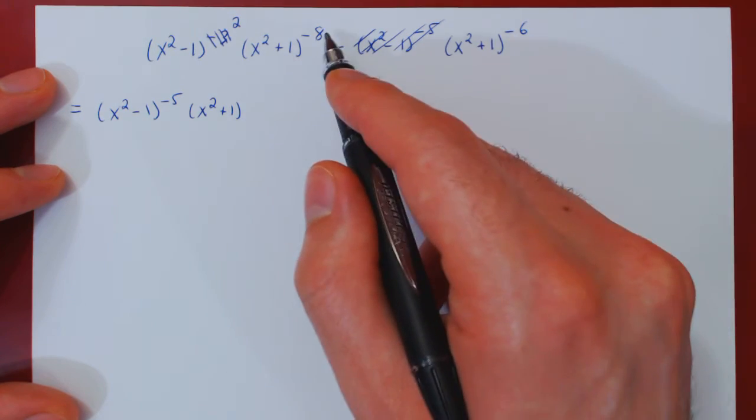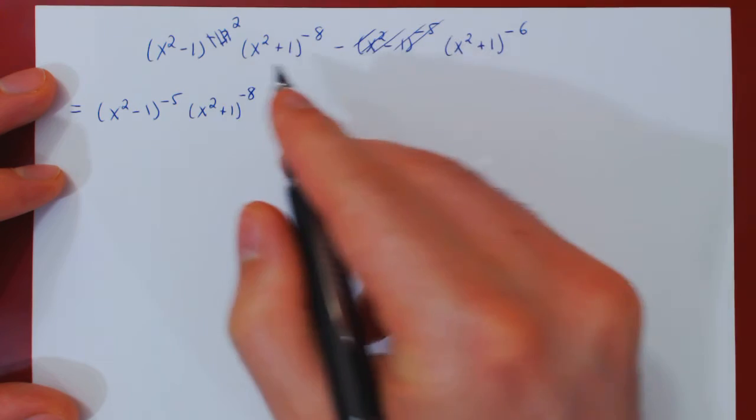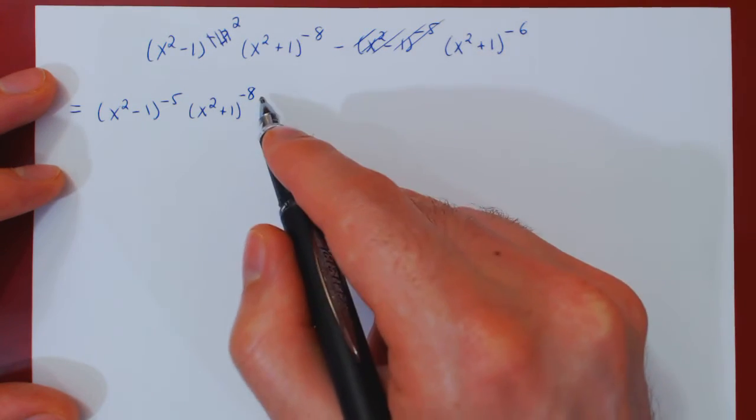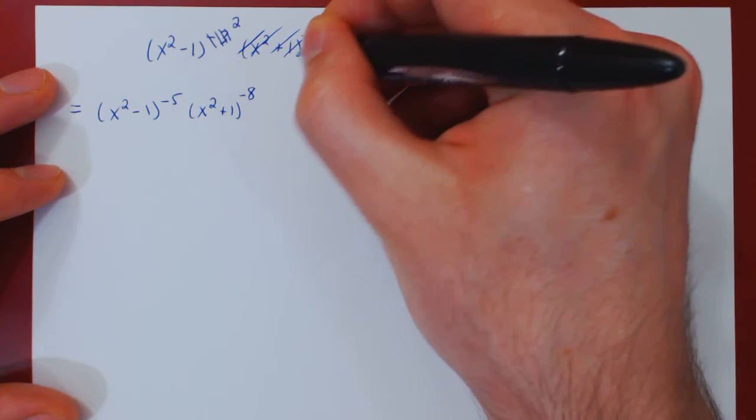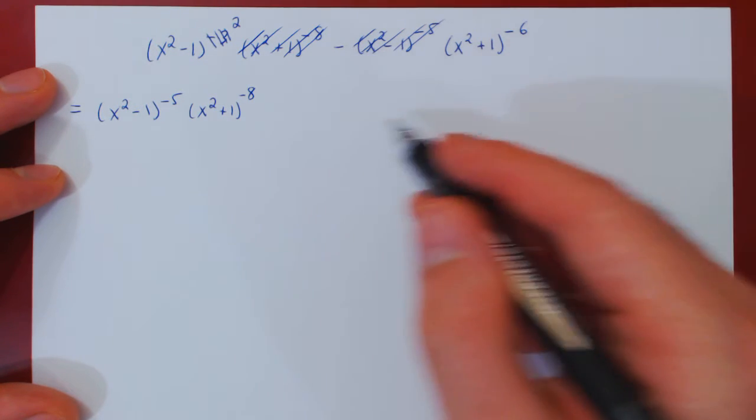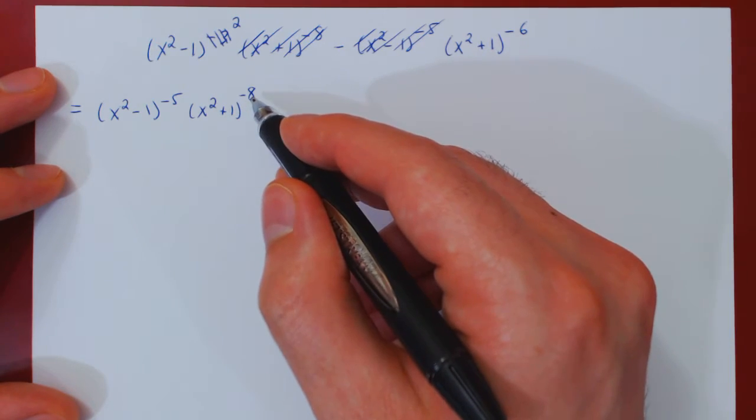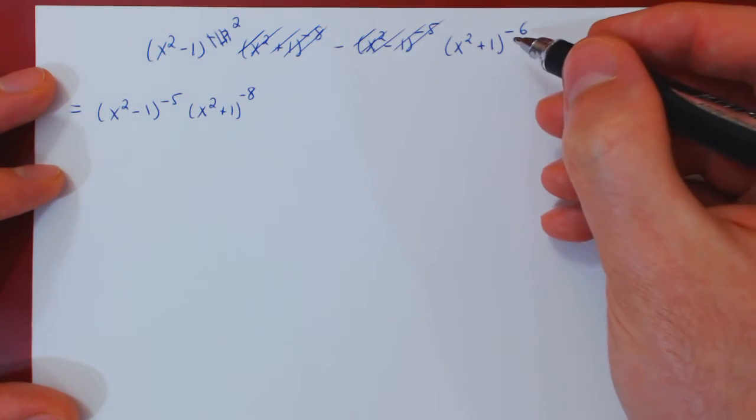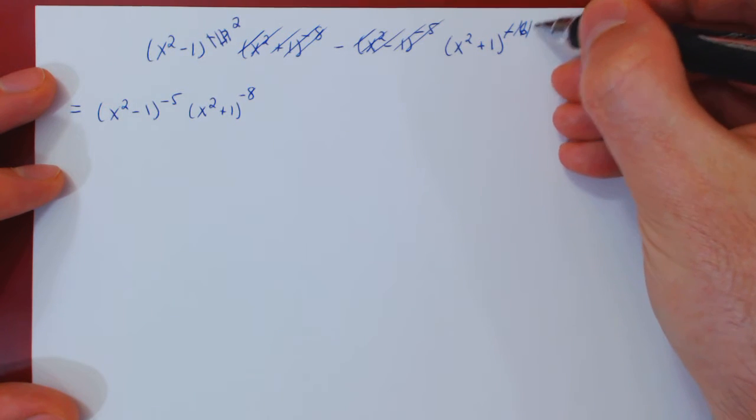And so we factor the term with the negative 8th power. So in the first term, the whole x squared plus 1 to the negative 8 is gone. And in the second, we are taking away negative 8. If you subtract negative 8, that's plus 8. Negative 6 plus 8 is positive 2.